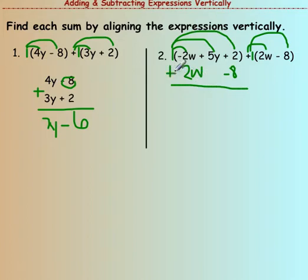So let's just add going vertically. Negative 2w plus 2w - that cancels out, we're left with nothing. Bring down the 5y, and then 2 minus 8 would give you negative 6.